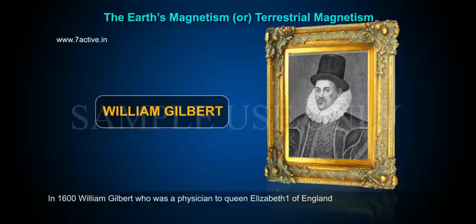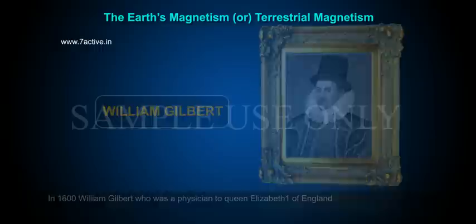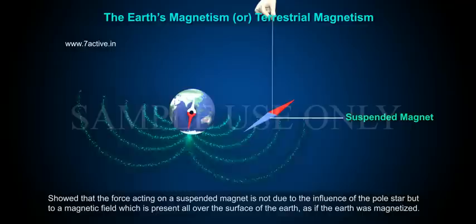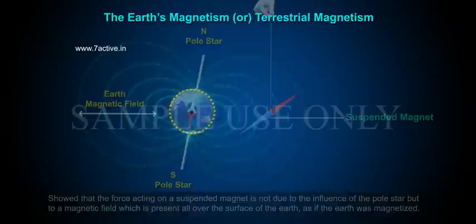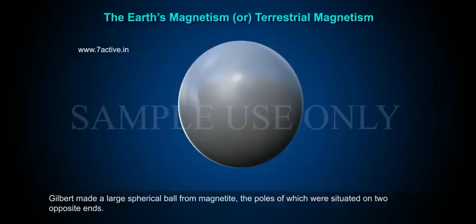The Earth's magnetism or terrestrial magnetism. In 1600, William Gilbert, who was a physician to Queen Elizabeth I of England, showed that the force acting on a suspended magnet is not due to the influence of the pole star, but to a magnetic field which is present all over the surface of the Earth, as if the Earth was magnetized.